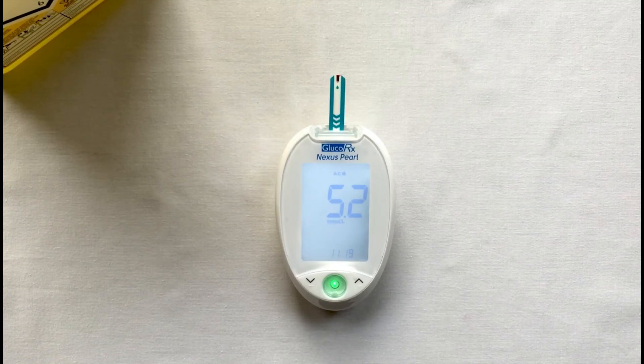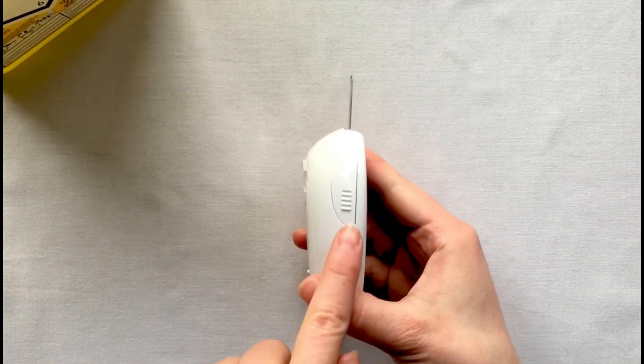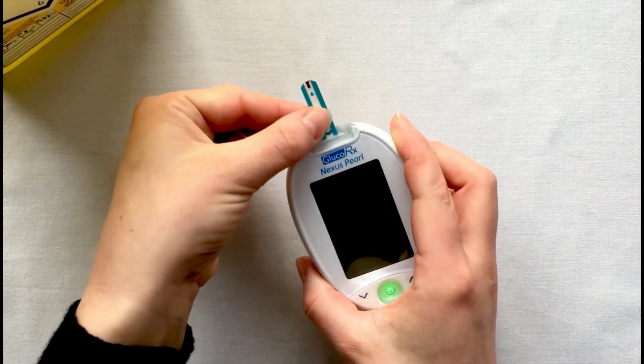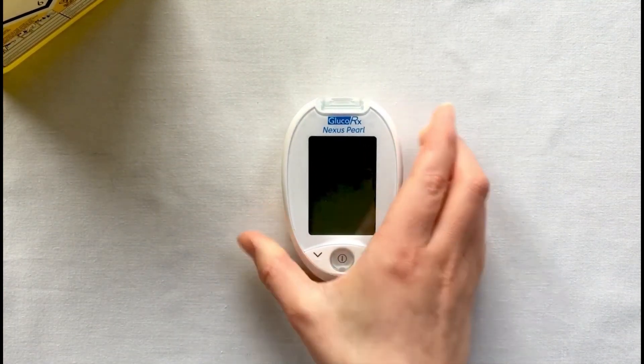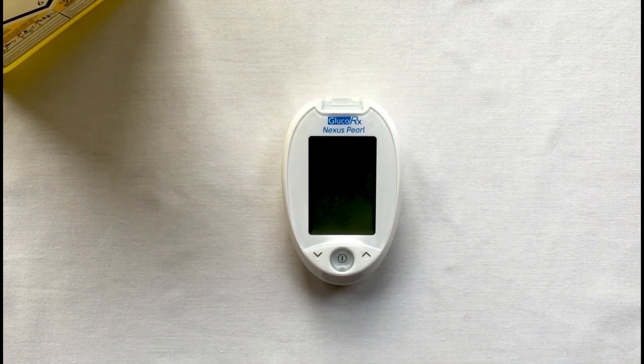You can either manually remove your test strip or use the test strip eject button. Please ensure you dispose of your strips and lancets into the safety sharps bin and your meter will automatically turn off.